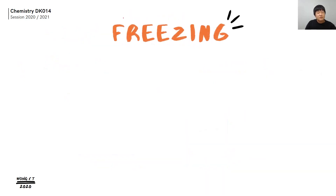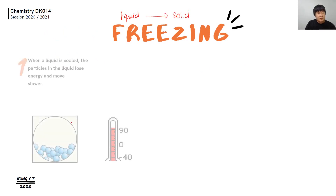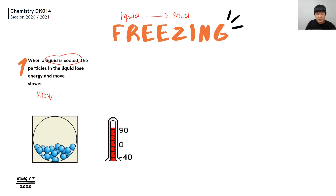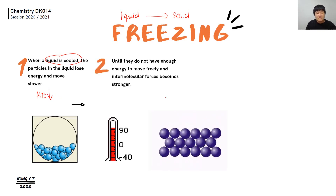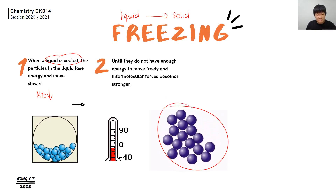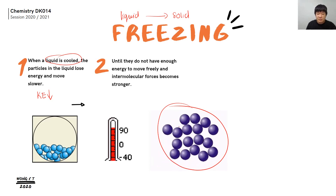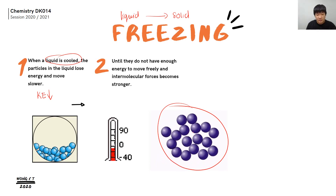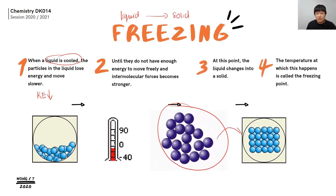Freezing is when liquid changes to become solid, so cooling occurs. When the liquid is cooled, the particles lose energy and the kinetic energy decreases. When kinetic energy decreases, the liquid particles move slower and come very close to each other. The force of attraction between the liquid particles becomes more significant and stronger, and at this point the liquid changes to solid.